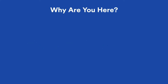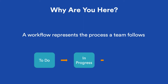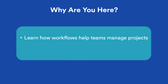Brian here. In this tutorial we'll discuss workflows, the fire behind Jira software. The workflow represents the work process a team follows. A simple workflow might suggest three basic statuses of an issue: to do, in progress, and done. Using these statuses teams track the issues they're working on. In this tutorial we'll learn how Jira software uses workflows to help teams manage a range of dynamic projects. We'll look at a few examples and we'll build out a workflow of our own. Let's get started.